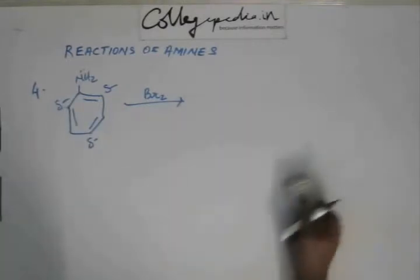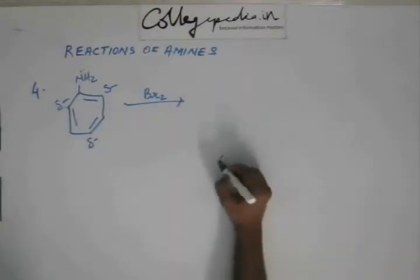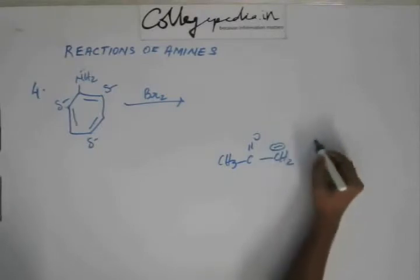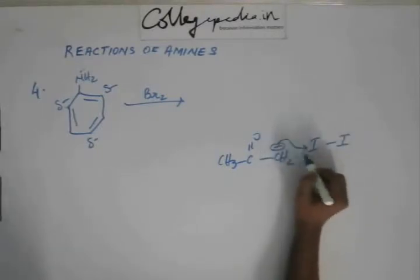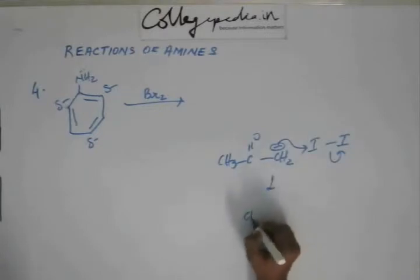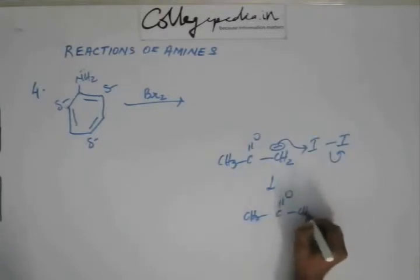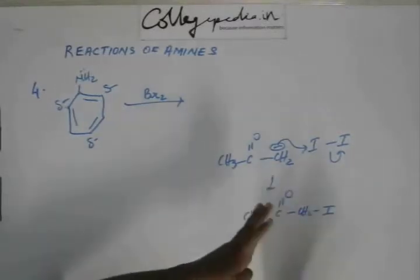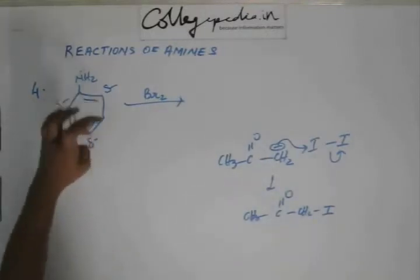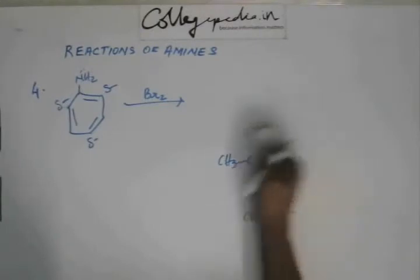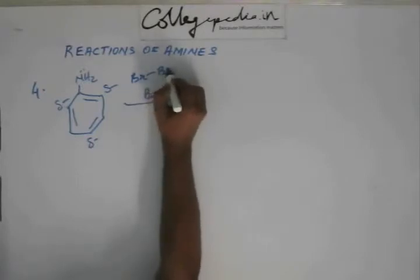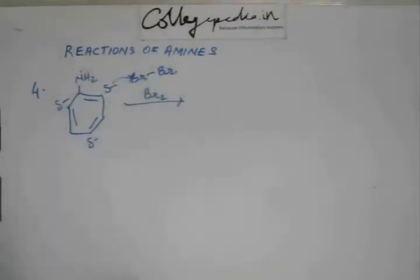Now, this partial negative charge at ortho and para positions — if you remember the haloform reaction, after the first step when you have a negative charge on carbon, that negative charge attacks iodine, and iodine gets attached to carbon. Similarly, if you have a partial negative charge at a carbon, it will go and attack this bromine. So you don't require any AlBr3 here. The bromine is attacked by the partial negative charge on the carbon, and bromine forms a bond with that carbon.